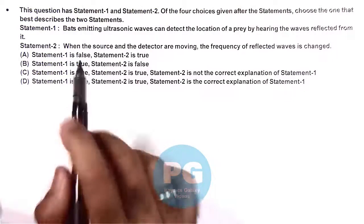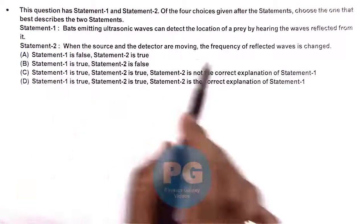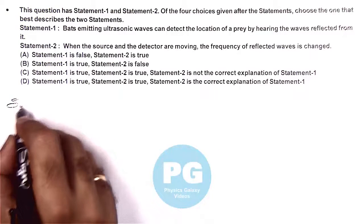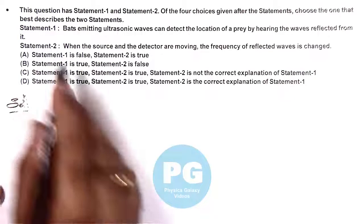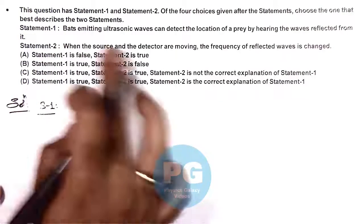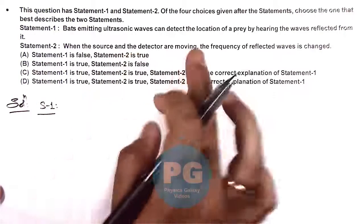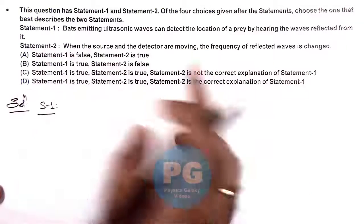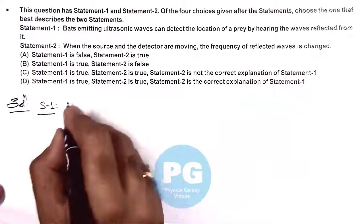In this question we are given two statements and we need to choose the correct option about the two statements. So here in the solution, if we talk about statement one, it is saying bats emit ultrasonic waves and these can detect the location of a prey by hearing the waves reflected from it. That's true.